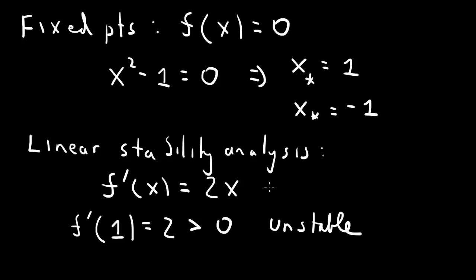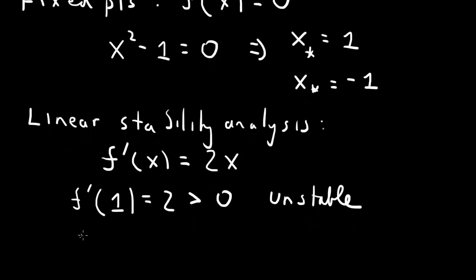A positive value of the derivative means that the fixed point is unstable. And f prime of minus 1, the second fixed point, is minus 2. And that's negative, which means that x star equals minus 1 is a stable fixed point.